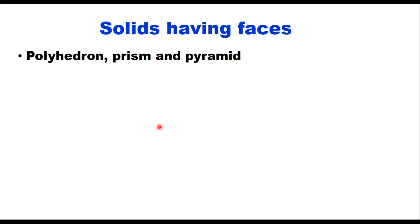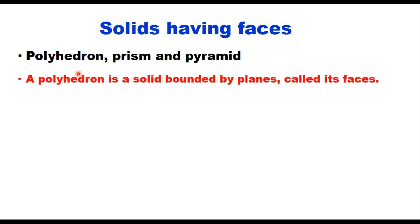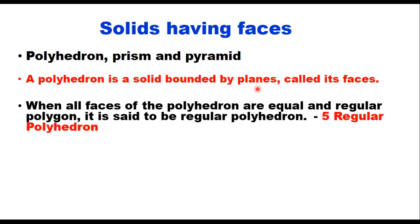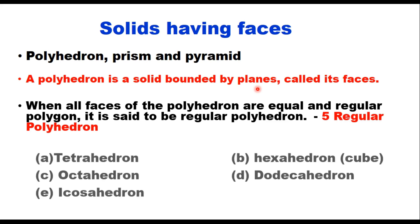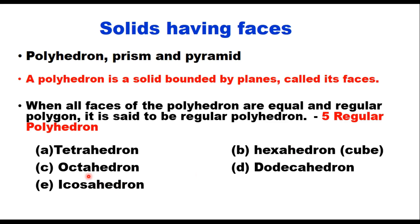Solids having faces can be either a polyhedron, a prism, or a pyramid. 'Poly' means many and in mathematics 'hedron' means face, so a solid which has a number of faces is called a polyhedron — a solid bounded by planes called its faces. When all faces are equal and regular polygons, it is a regular polyhedron. When the axis of the solid is perpendicular to the base, it is called a right solid.